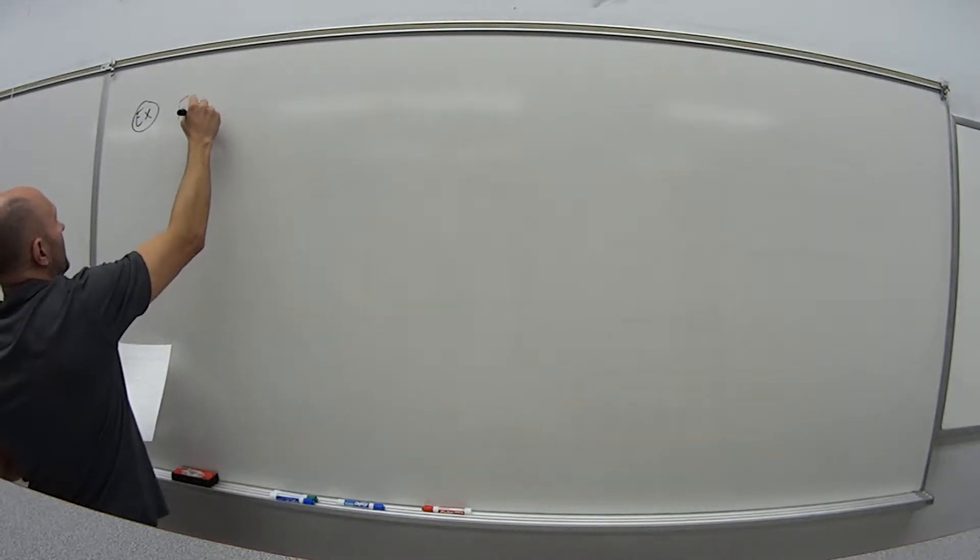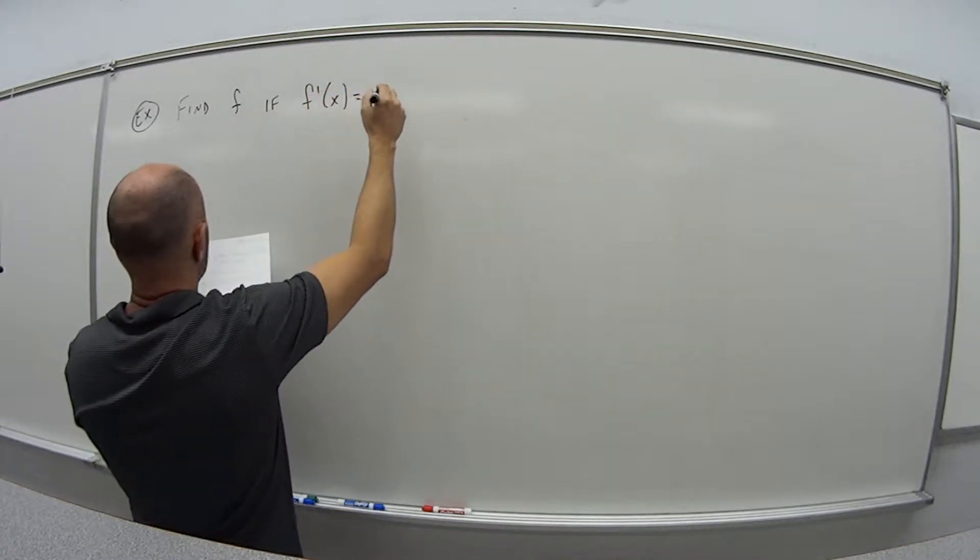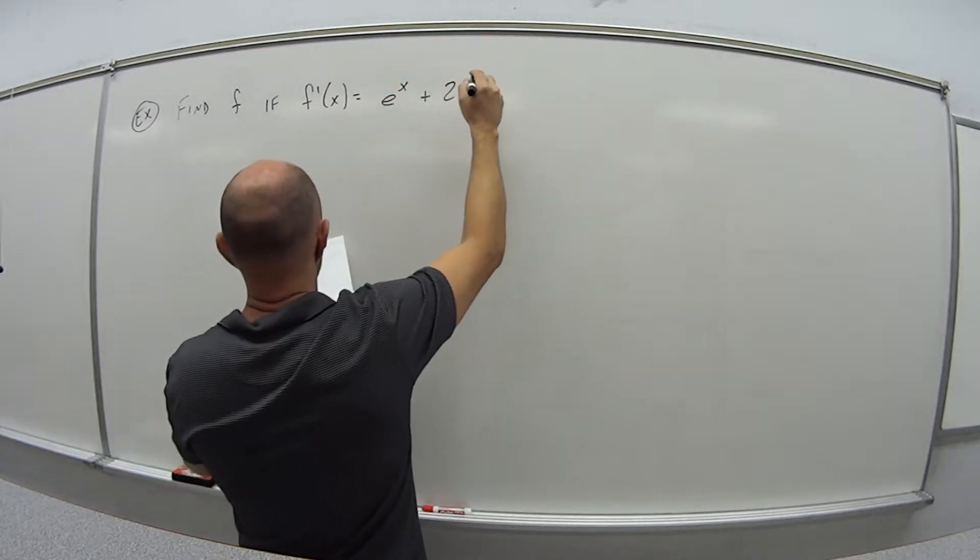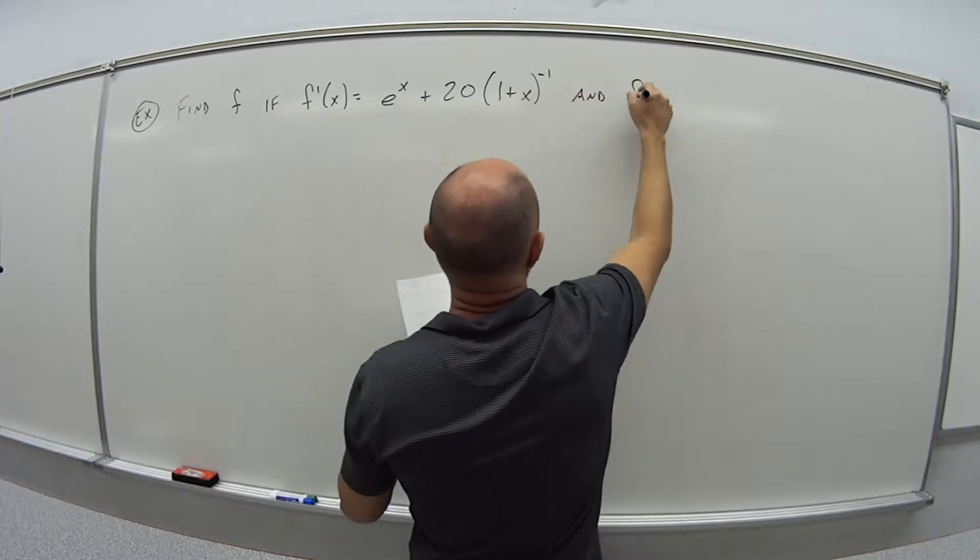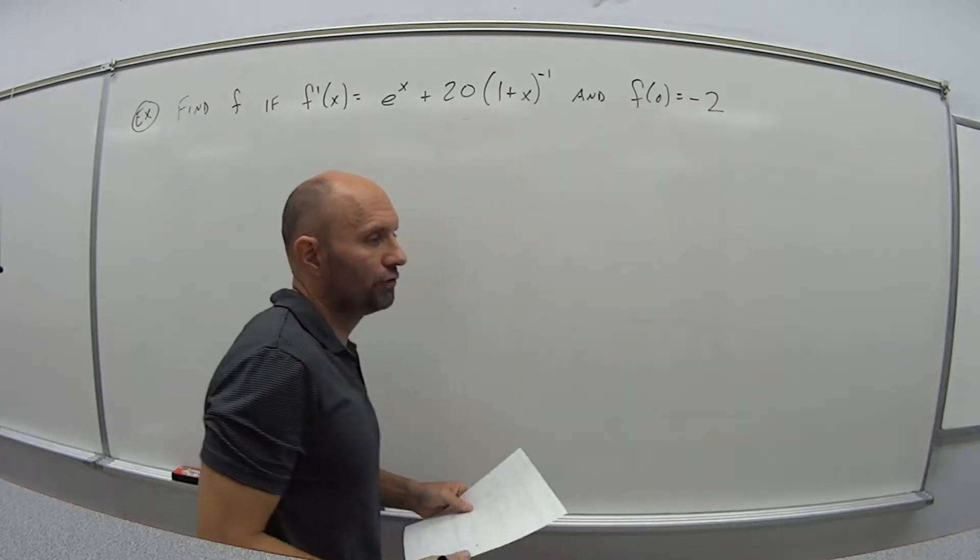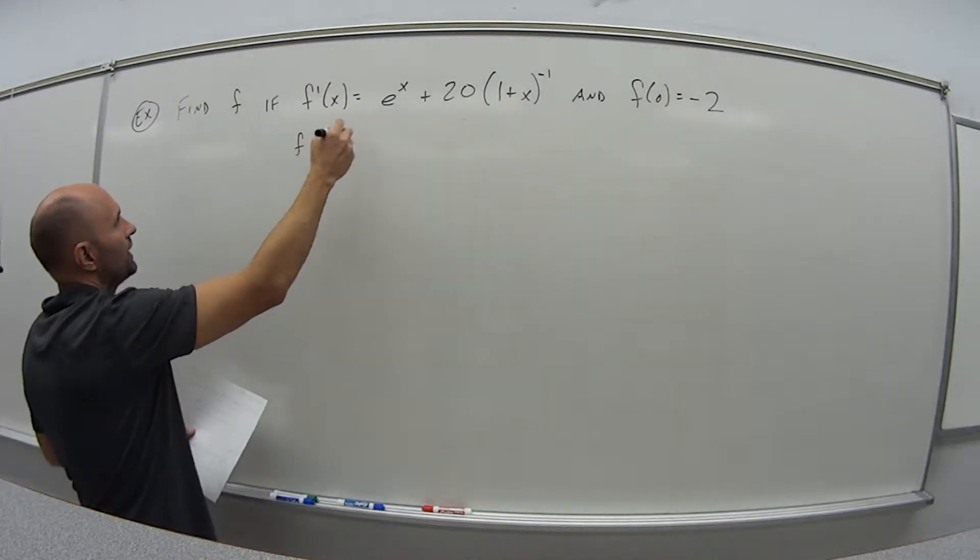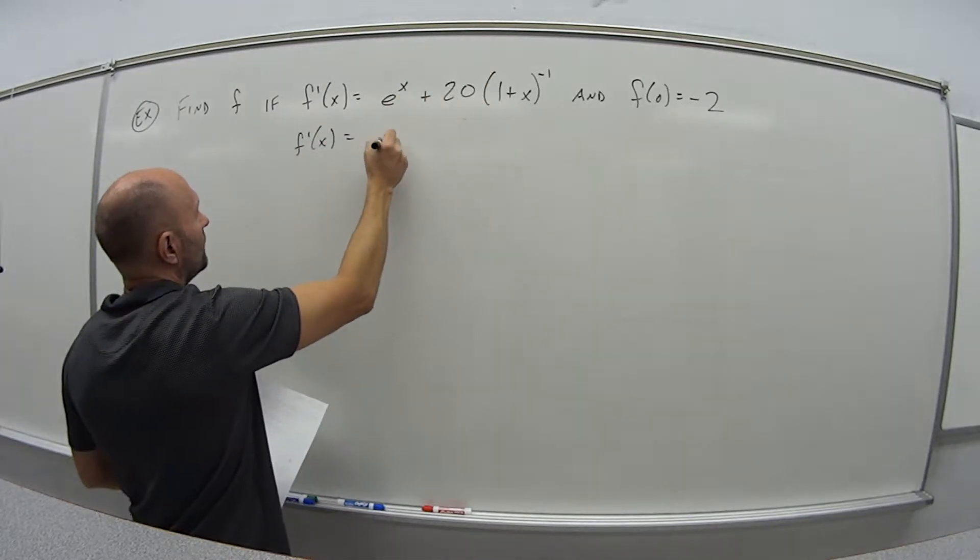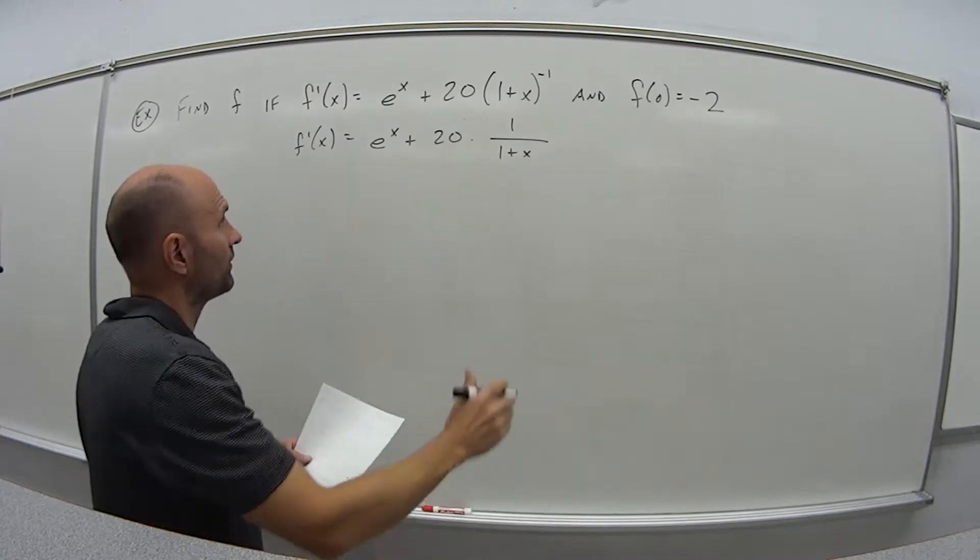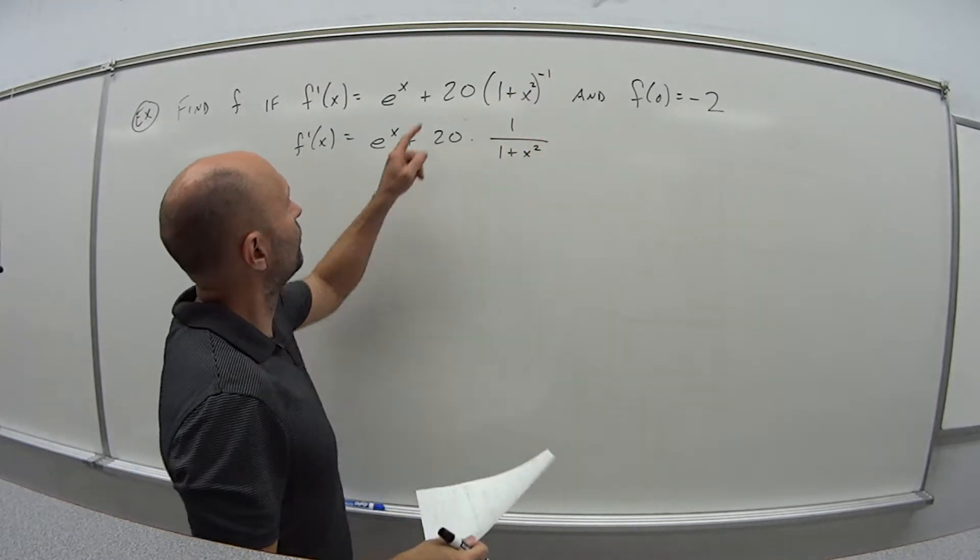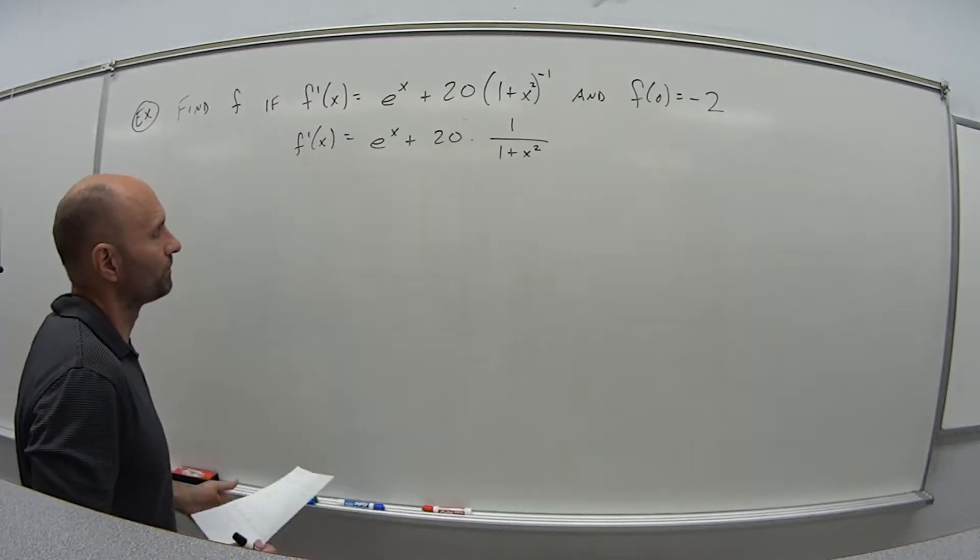So this example, we want to find f if f prime of x is equal to e to the x plus 20 times 1 plus x to the minus 1, and f of 0 is equal to negative 2. So first thing working with this derivative, I'm going to change it up here, f prime of x. I'm going to get rid of this thing to the negative 1 and write it what it would look like. So I get 20 times 1 over 1 plus x squared. So 20, 1 plus x squared to the minus 1. So this whole thing, when I have anything to the minus 1 power, I can just take it down into the denominator.